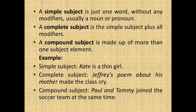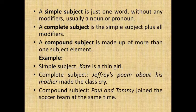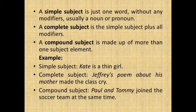A simple subject is just one word without any modifier, usually a noun or pronoun. A complete subject is a simple subject plus all its modifiers. A compound subject is made up of more than one subject element. For example, a simple subject: 'Kite is a thin goal' — here a noun or pronoun appears without any modifier.